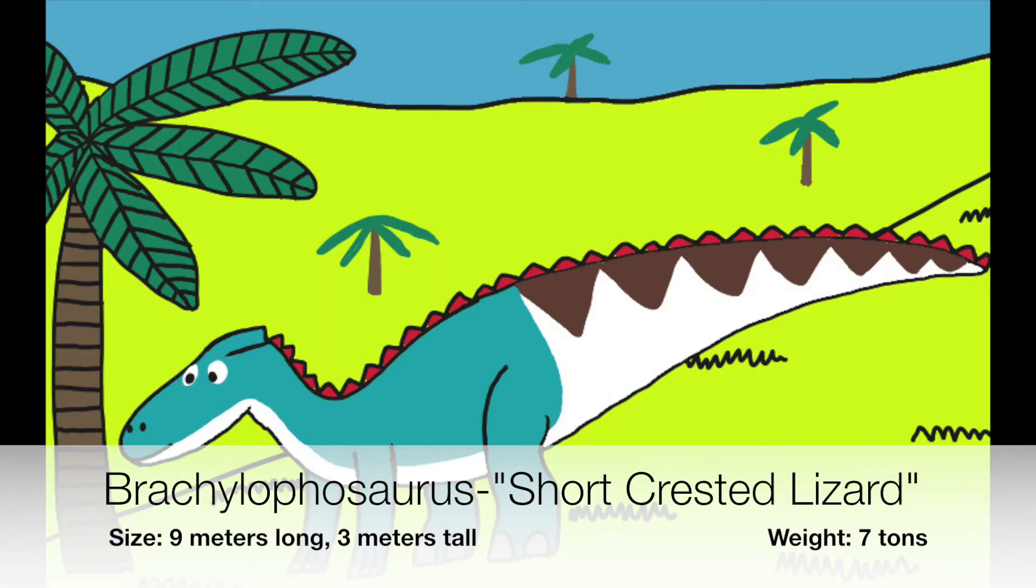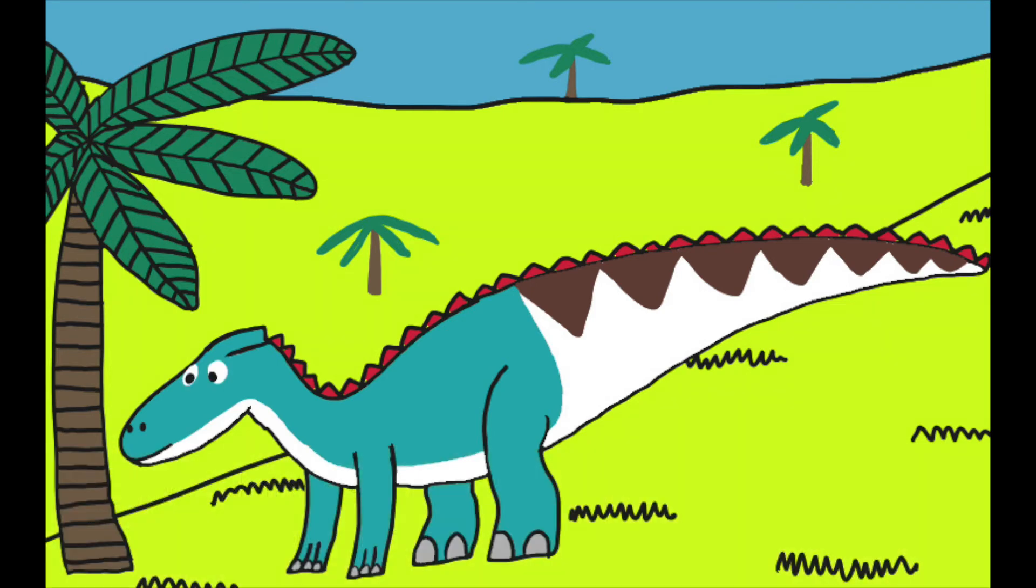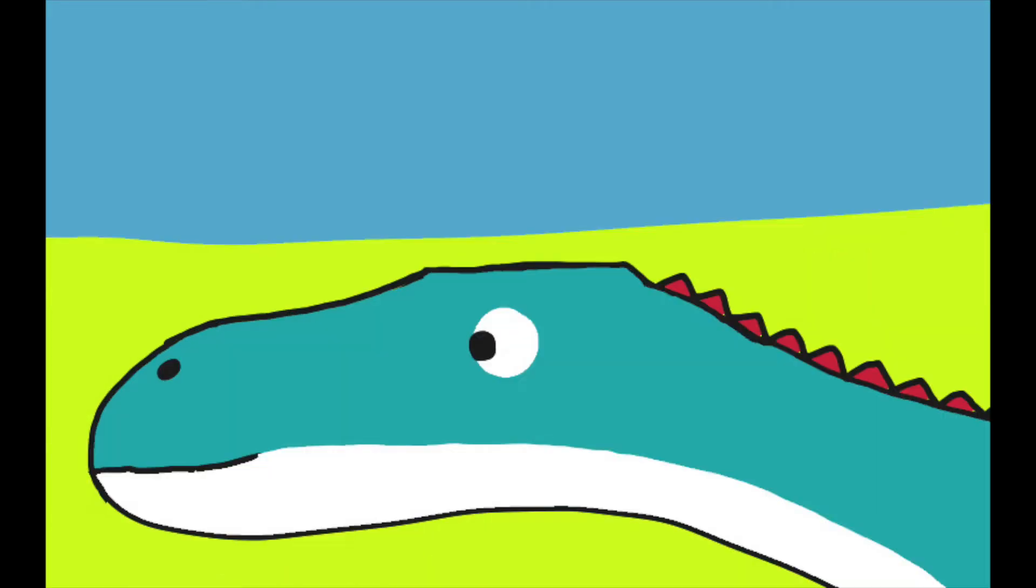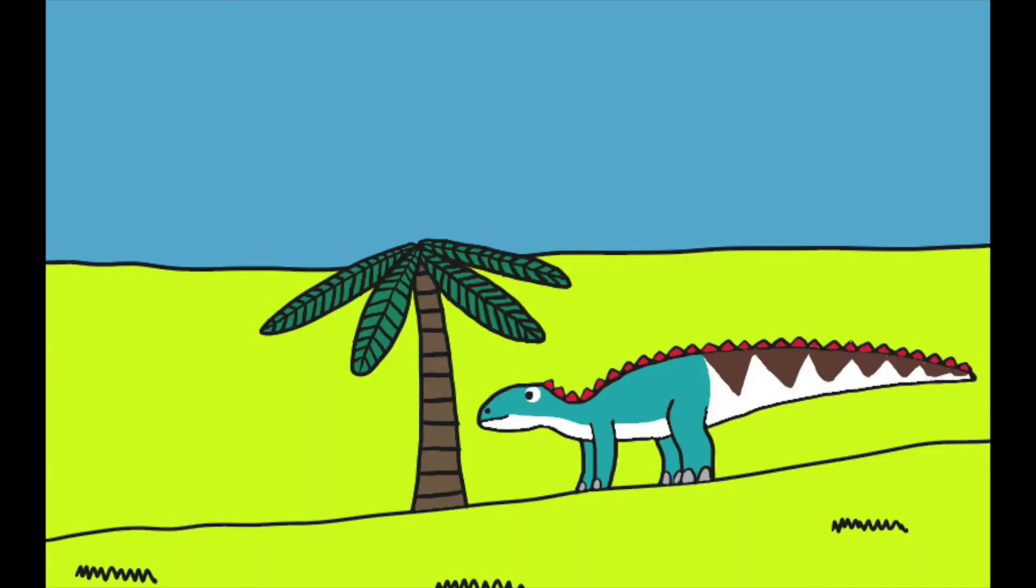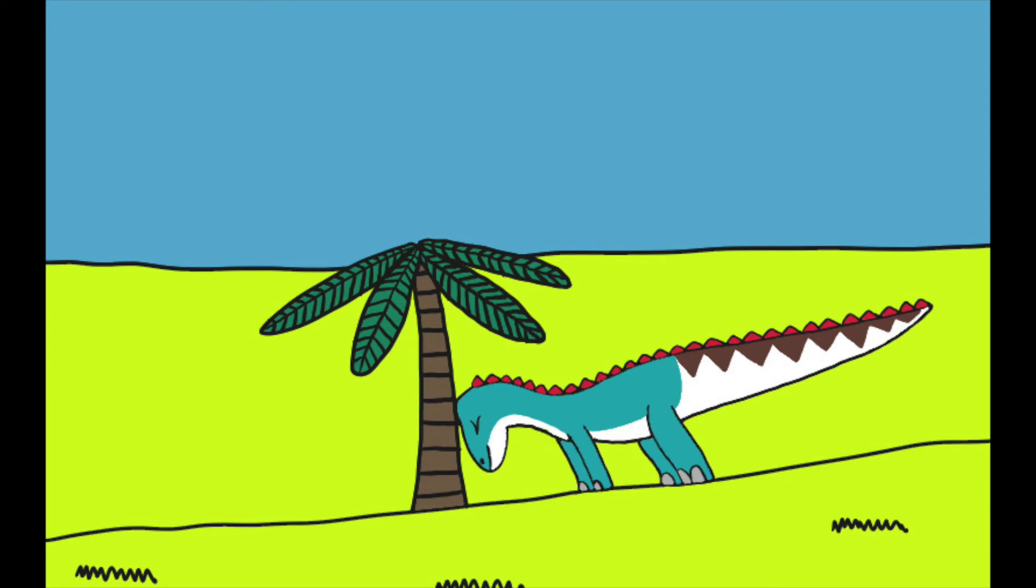Brachylophosaurus has a head crest that can easily go unnoticed. The head crest is flat and sheet-like. Males would probably use them for display, or to fight for a mate, or maybe a way to push down trees like how elephants would do today.